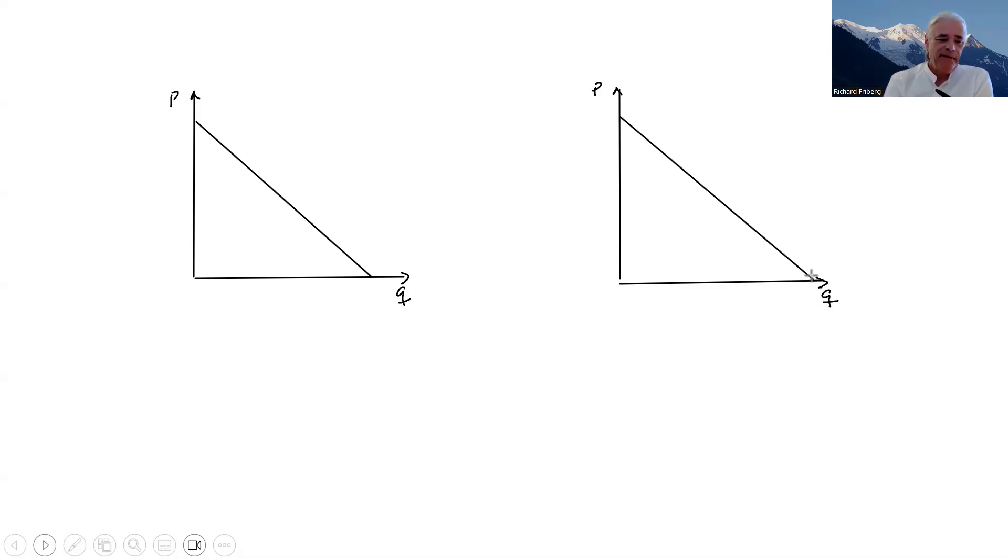So we have two firms. We assume that they're completely symmetric in terms of the demand. So they're facing some downward sloping demand curve, just as usual in monopolistic competition.